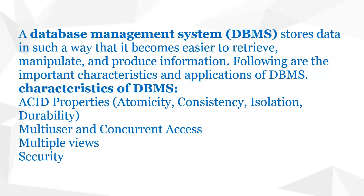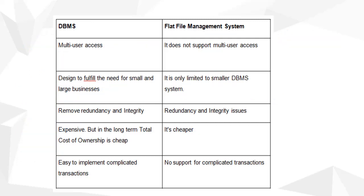Now we know what a database is and what a database management system is. Initially, we used to store data using direct ledger systems — copy and pen. But the main disadvantage was that if the copy or ledger was lost or broken, our records were lost. That is why we shifted towards using computers. In the early days of computers, data was stored in the form of files, called a file system. But the file system had many disadvantages, which is why we shifted towards using databases.